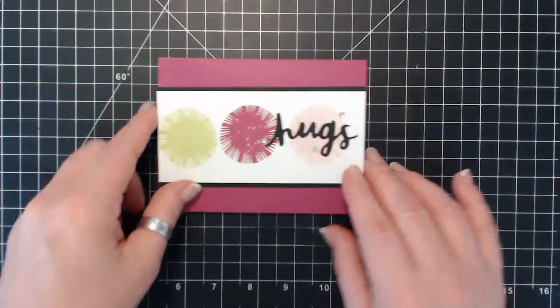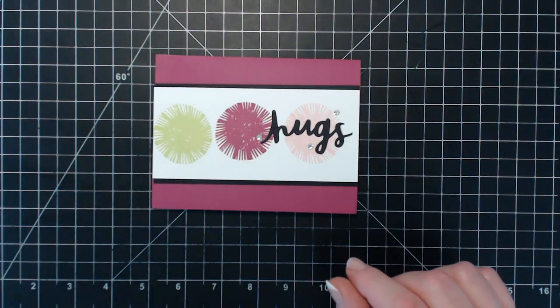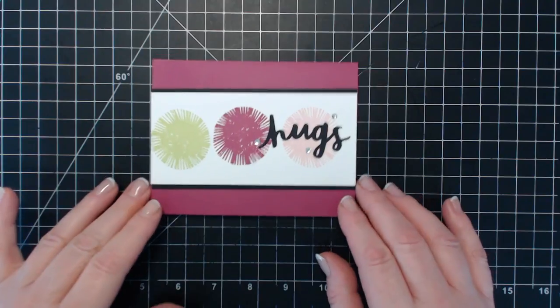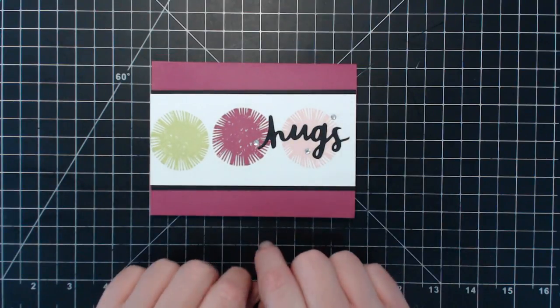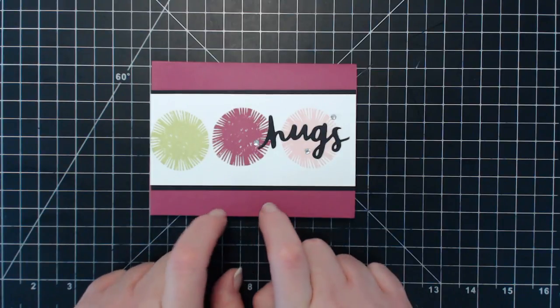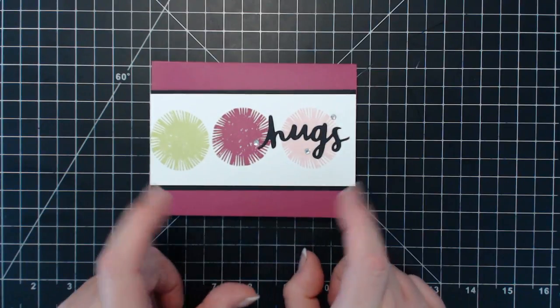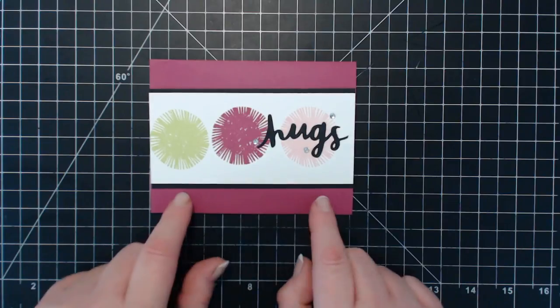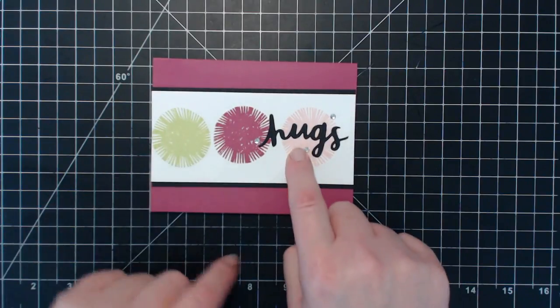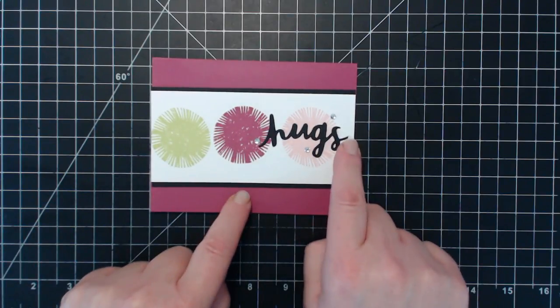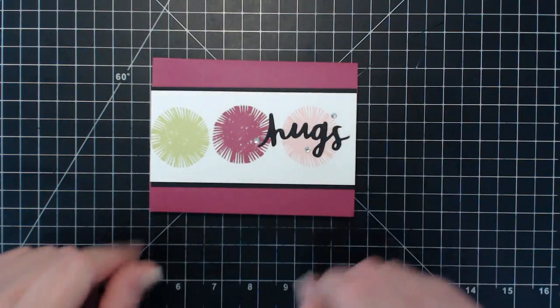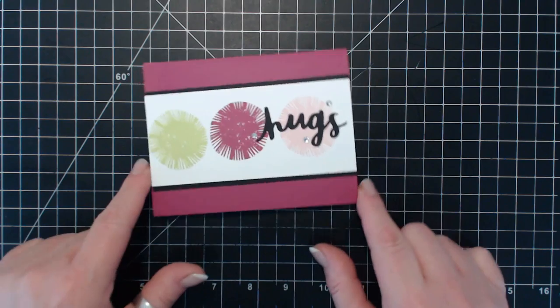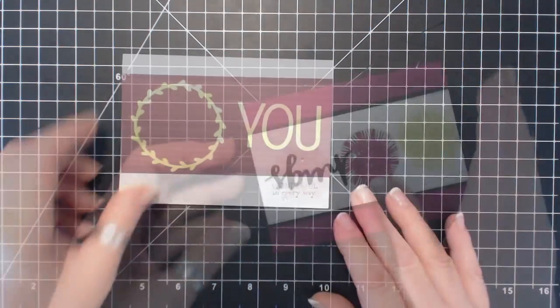This one is from Bonnie Sanchez who is also from Canada. She used some of the new in colors: Berry Burst, Lemon Lime Twist, Powder Pink. She's also used the Lovely Word thinlit dies and cut out the word hugs. Love that one Bonnie, thank you so much.